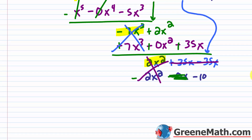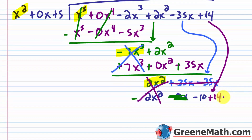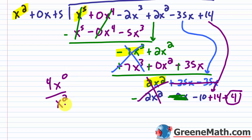But I still have one more term to bring down — plus 14. So combining: negative 10 plus 14 gives positive 4. You can't continue dividing at this point because 4 is degree zero and the divisor has degree 2 — so 4 is the remainder.